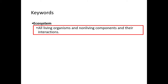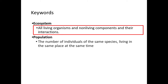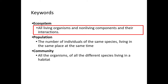An ecosystem is where we have all living organisms and non-living components and their interactions. A population is a number of individuals of the same species living in the same place at the same time. For example, in a garden you may have 10 ladybirds — that is a population of ladybirds. A community is all the organisms of all the different species living in a habitat.